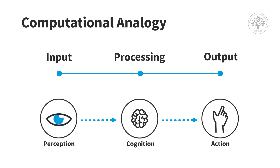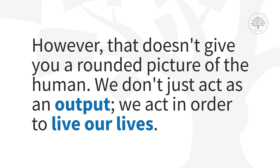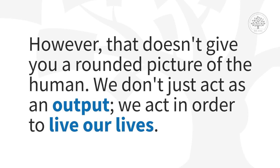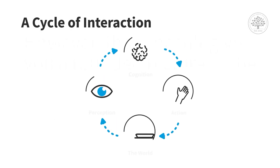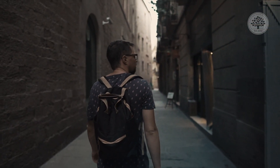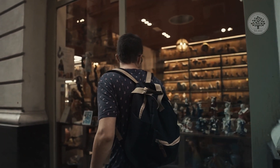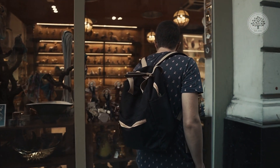You can look at those parts individually, and a lot of psychology is about focusing on one part at a time and trying to make sense of what's going on there. However, that doesn't give a rounded picture of the human, because we don't just act as an output — we act in order to live our lives. There's actually a loop that goes on. So we might perceive something; I might spot something I'm interested in, think I'll go and look at it, and then perhaps start to move off in that direction.